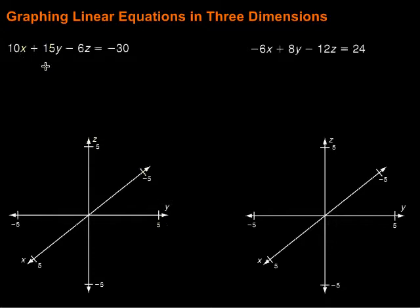To do that, finding those intercepts, we just put in zero for the other two variables. So I'm going to start out by solving for x, so I put in zero for y and z. So I have 10x, that would be zero, this would be zero, equals negative 30. Divide by 10 on both sides, and we get x being equal to negative 3. So that's our x-intercept.